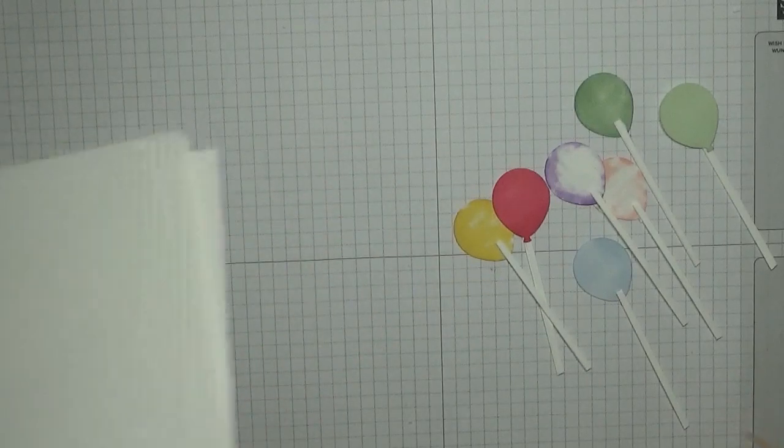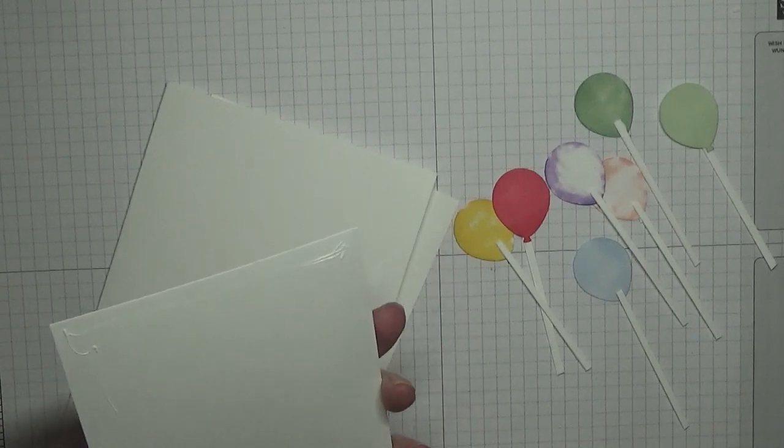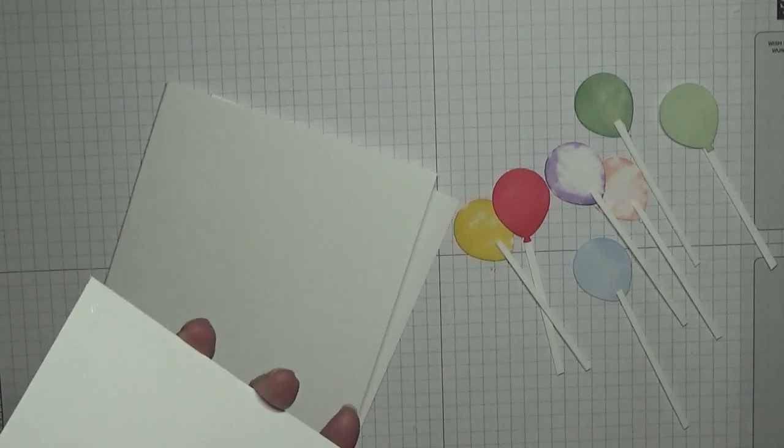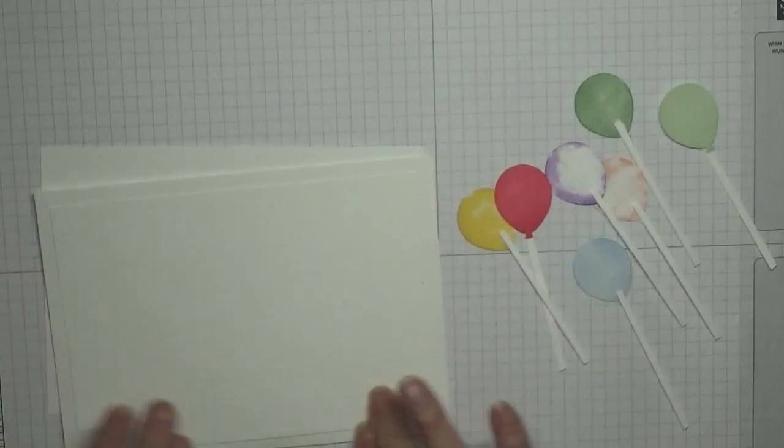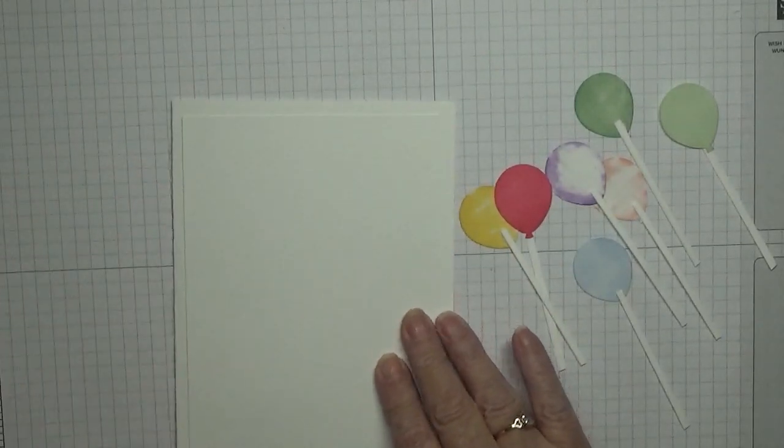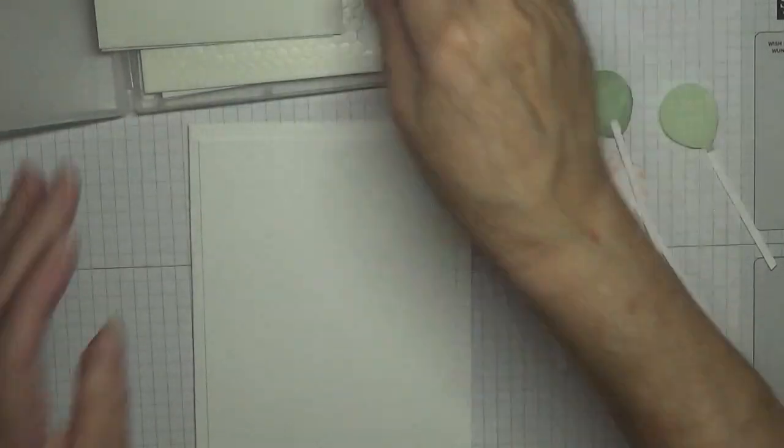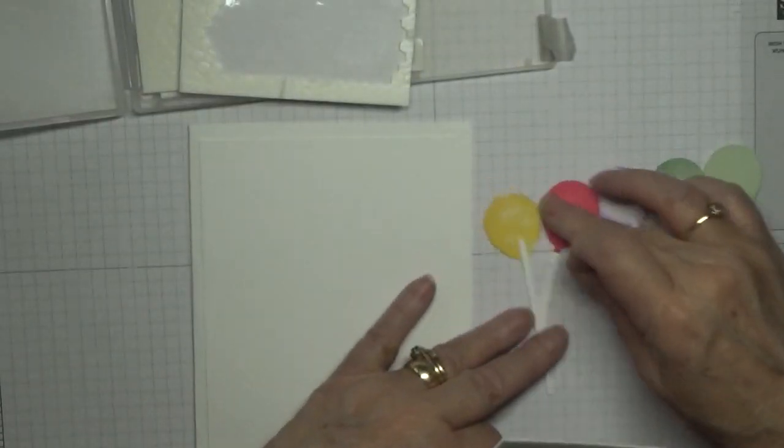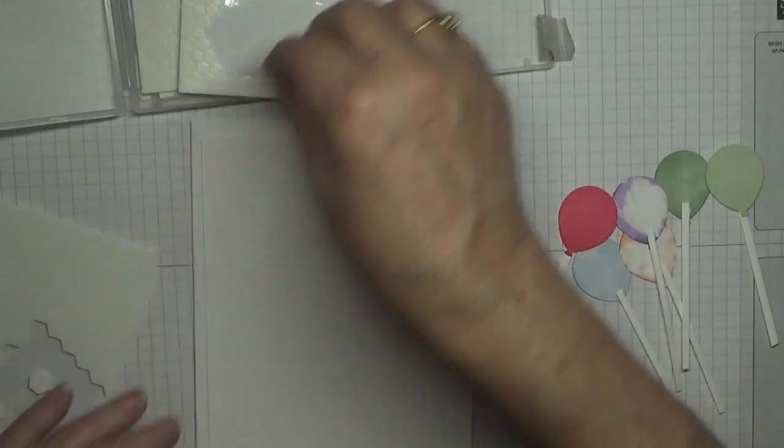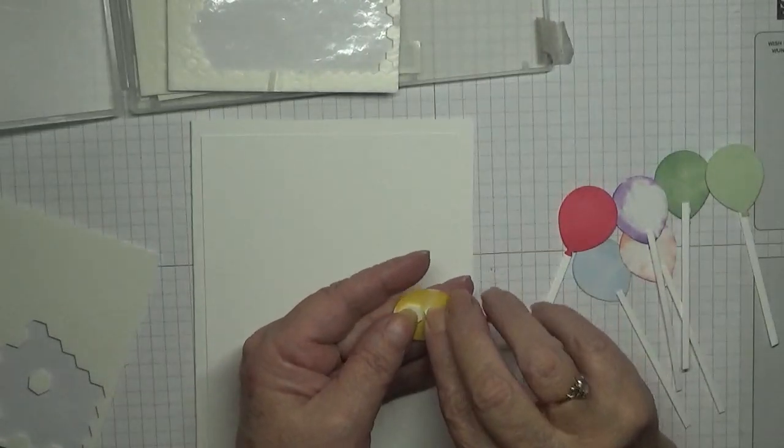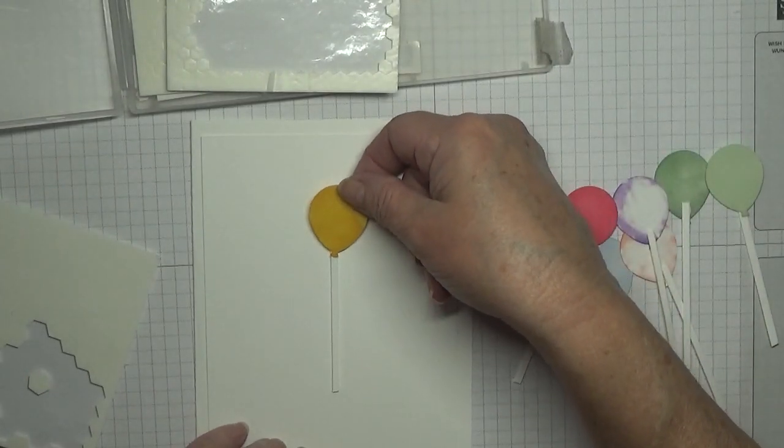Right. Bring our card in and our card base. We're going to stick this. Now this card is great for a friend, someone who isn't a close family member. And we're going to stick some dimensionals on these balloons. Right, each one. First of all, I'm going to pop the yellow one down. And I'm going to pop that there.